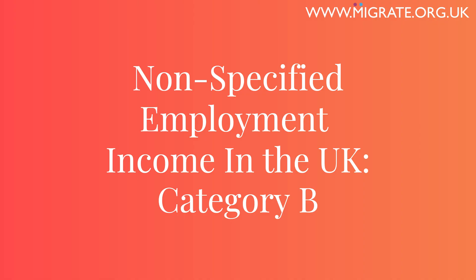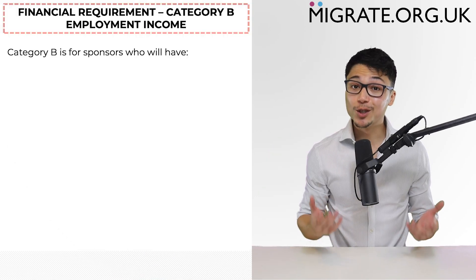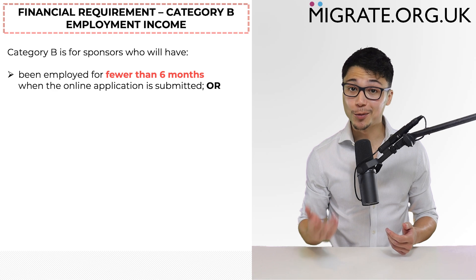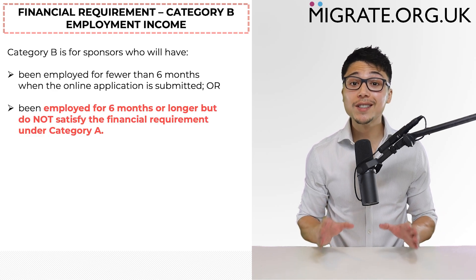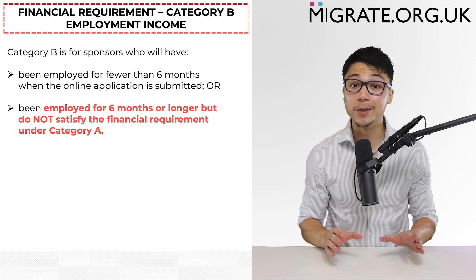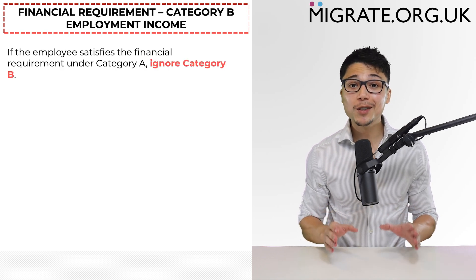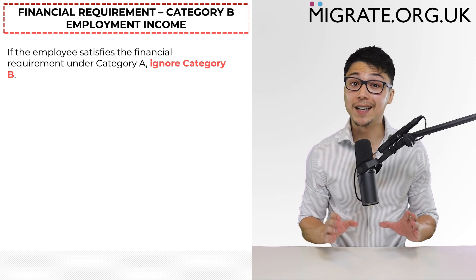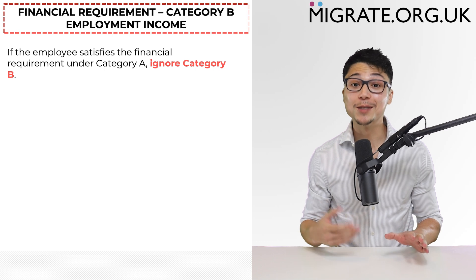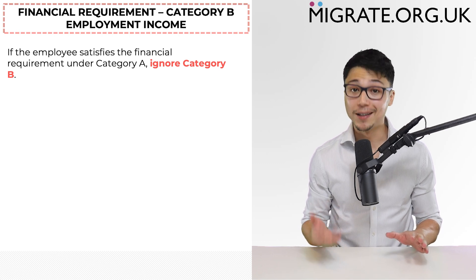Let's now discuss category B, which is the category used for some sources of non-specified employment income. Category B is for sponsors who have: one, been employed for fewer than six months when the application is submitted, or two, been employed for six months or longer but do not satisfy the financial requirement under category A. So if the sponsor satisfies the financial requirement under category A, just ignore category B, as I'm sure you have much better things to do than spend time learning about requirements that don't apply to you.